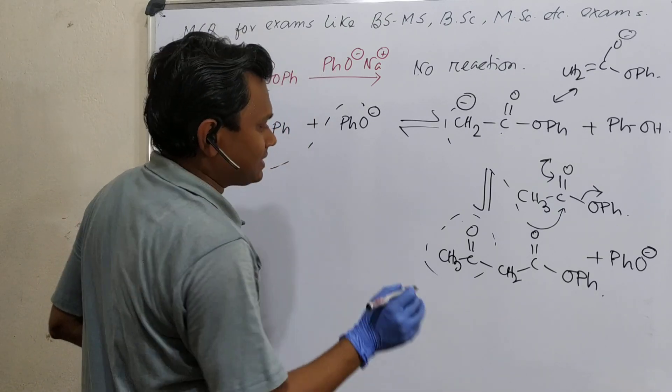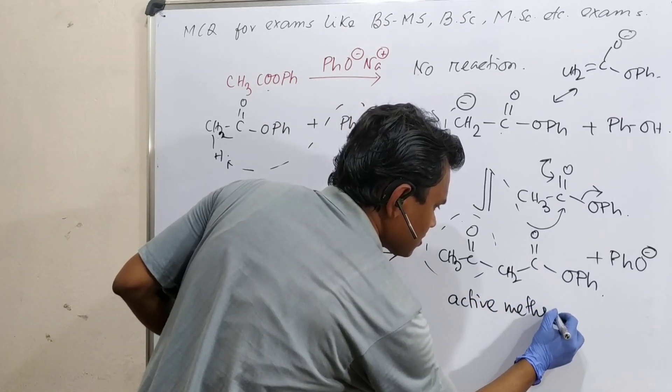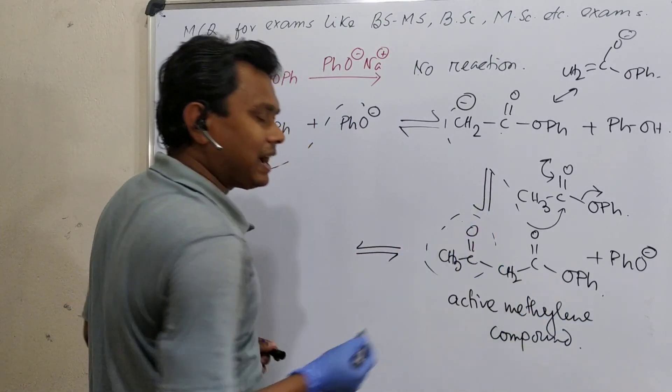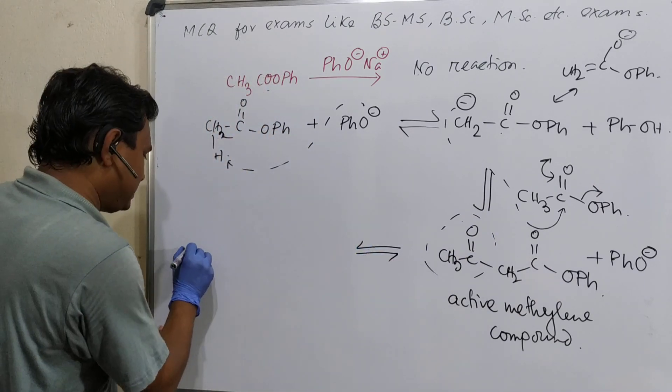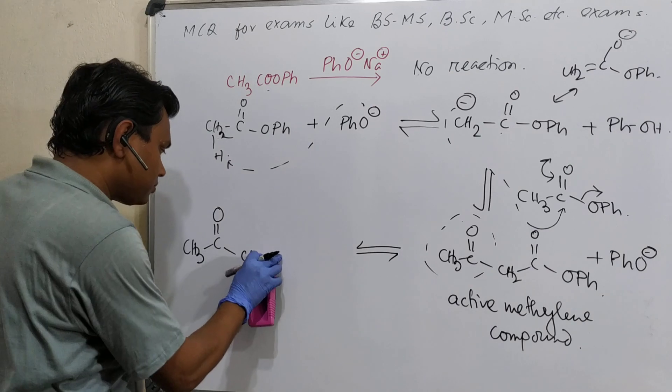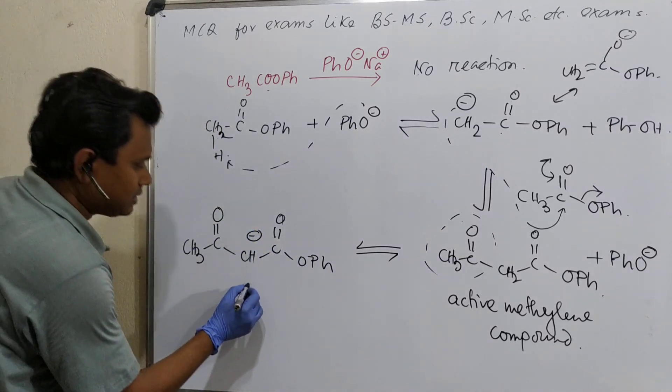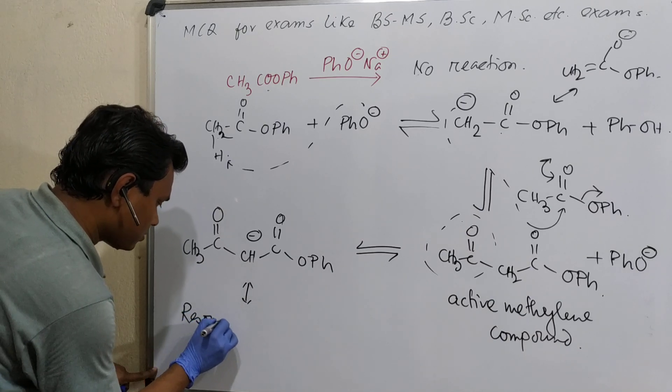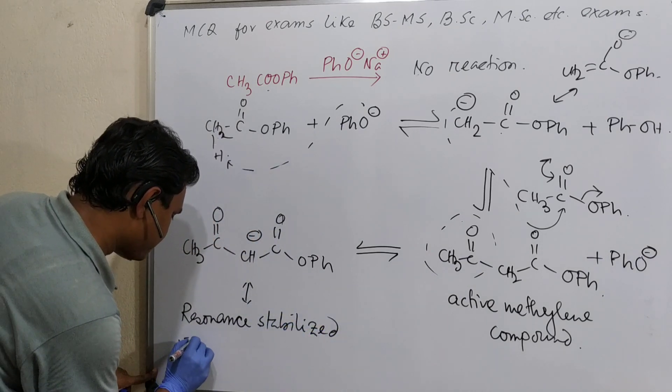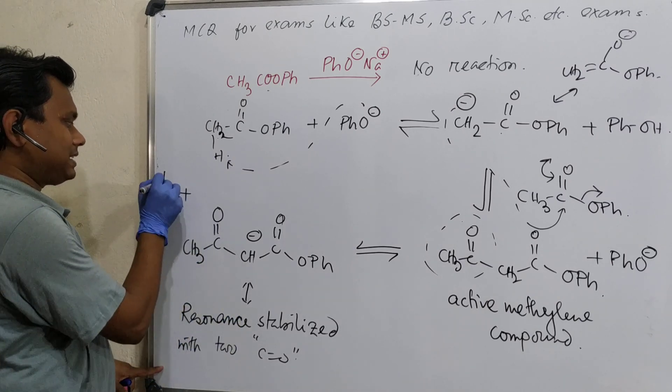I am going very fast because previously I have already uploaded lectures about this Claisen ester condensation. If you feel any confusion, please visit that video. This is OH, this is OPH. See, this phenyl left. This part, this ketomethyl is this one. And this ester part is coming from this enolate. In next step, along with that, what is produced? PHO. Base is regenerated.